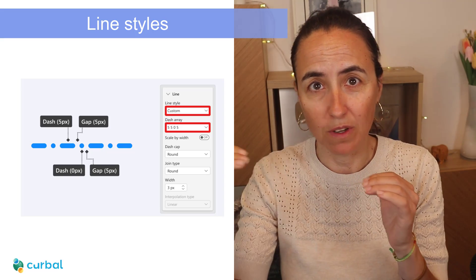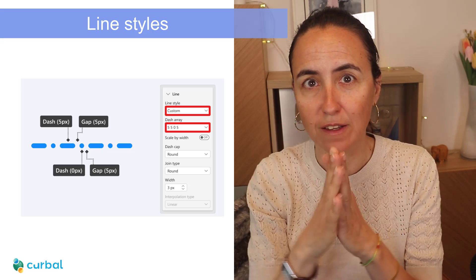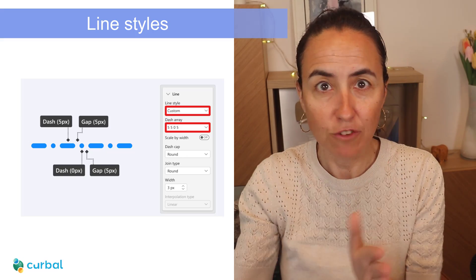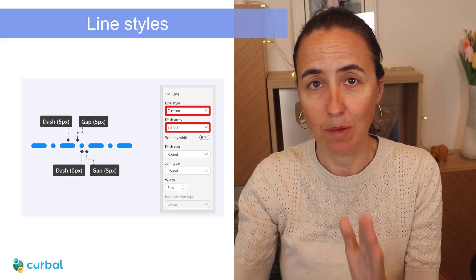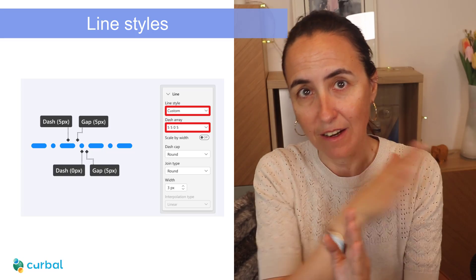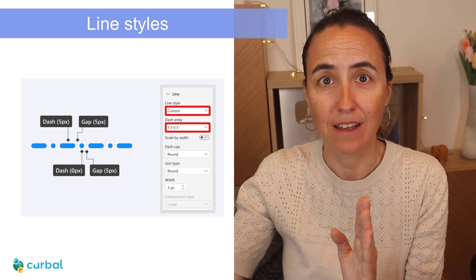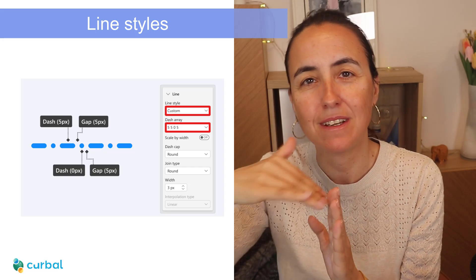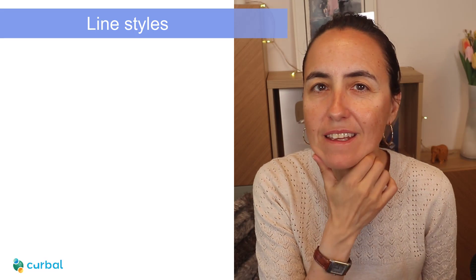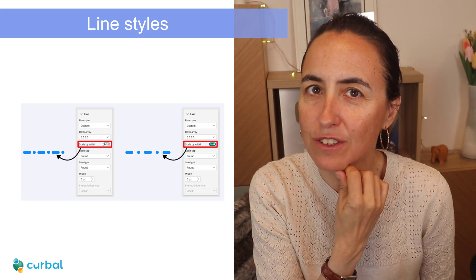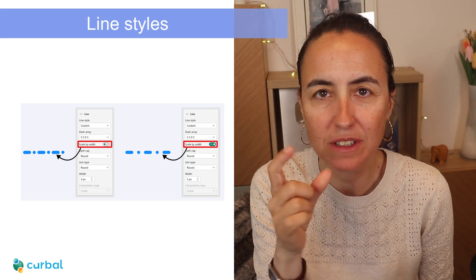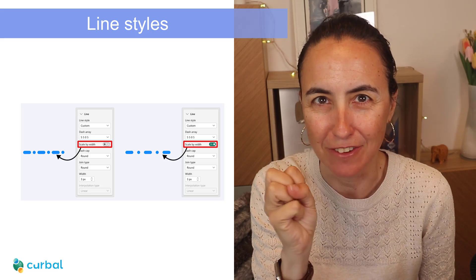They are giving us another possibility to customize a line style, and this is perfect when you want to differentiate periods of time. Forecasting is one clear example — this is historical data we have, and this is data we predict will come — so it's nice to have a different line style for that.